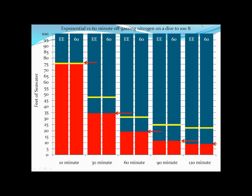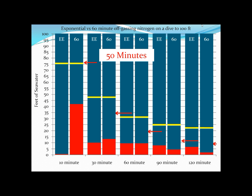Comparing the two models, a very significant difference is visible: the faster the compartment, the more nitrogen the RDP's 60-minute gas washout assumes there actually is than what is actually in the body. But on the right side of the screen — the slower compartments — the 60-minute gas washout calculation that the RDP uses is actually underestimating the amount of nitrogen that is in the body compared to what would actually be there using exponential washout.